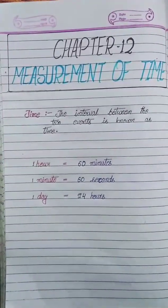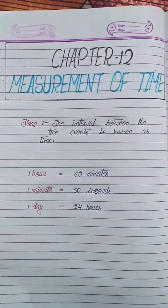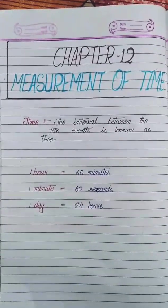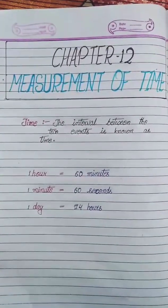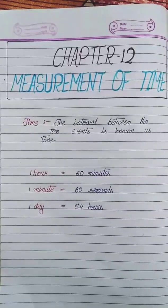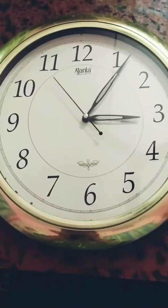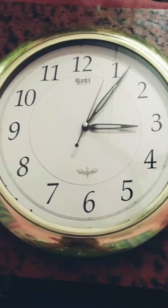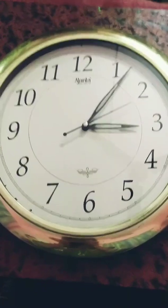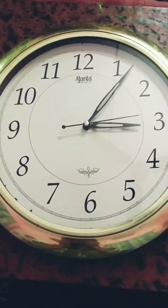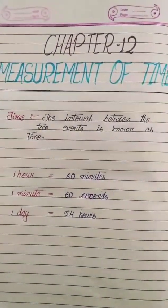Today we are going to start our new chapter of maths, that is Chapter 12 - Measurement of Time. In our day-to-day life, everything depends upon time. You come to know when to go to school, watch TV, study, or play by looking at the clock. Now let's first understand the meaning of time.